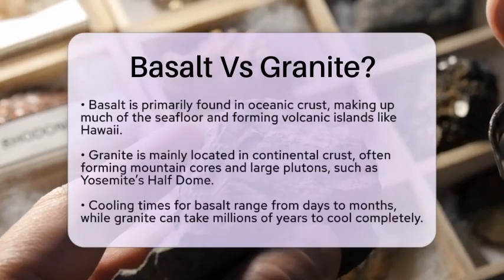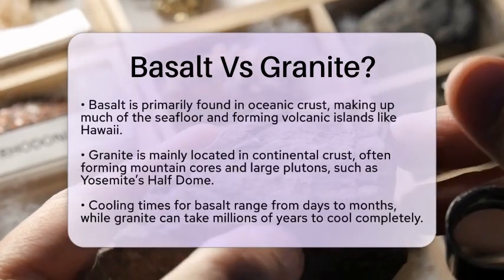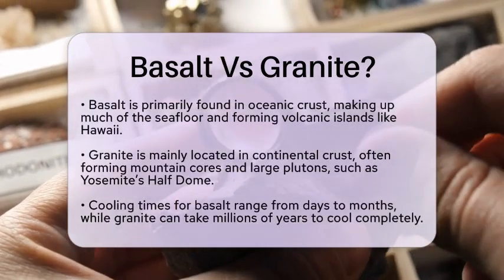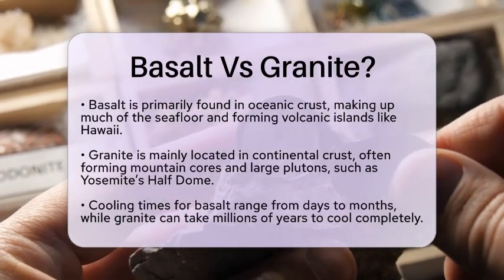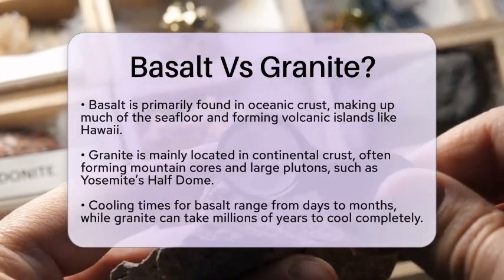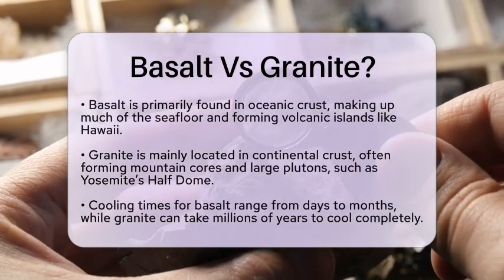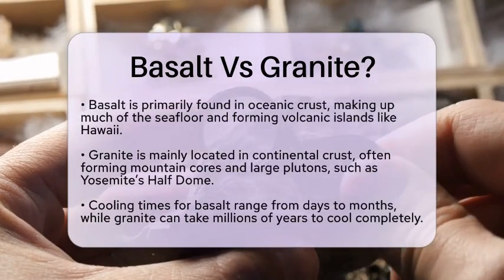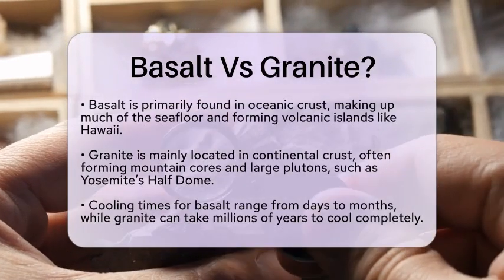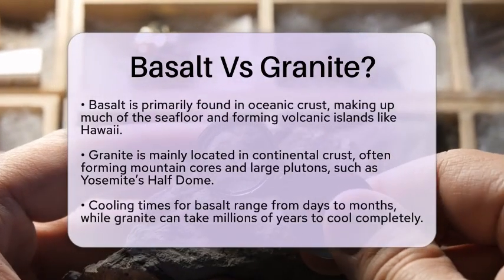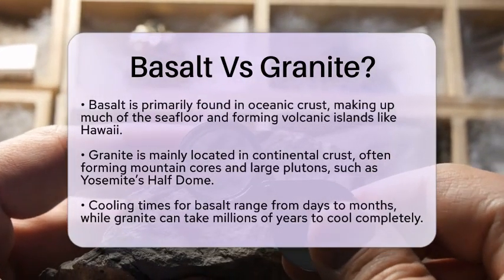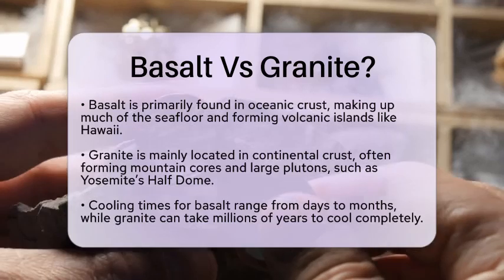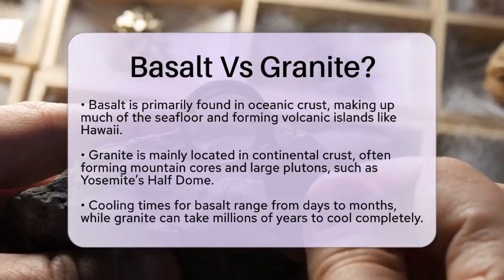Geologically, basalt is found primarily in oceanic crust, making up much of the seafloor and forming volcanic islands such as Hawaii. Granite, in contrast, is mainly found in continental crust, often forming the cores of mountain ranges and large plutons like Yosemite's Half Dome.